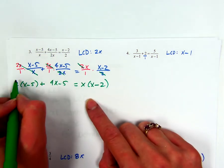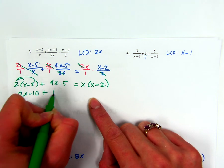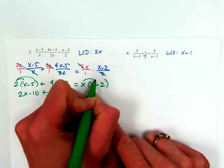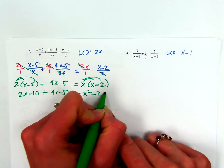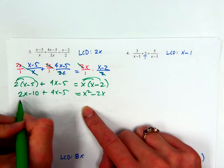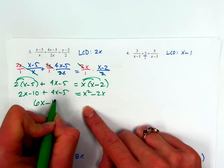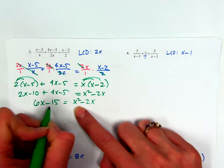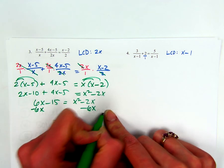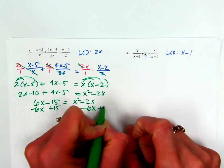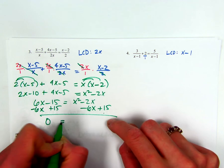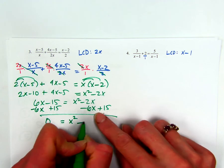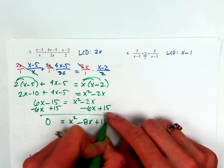All right, so you have to distribute it in a couple of places. 2X minus 10 plus 4X minus 5 equals X squared minus 2X. So now if I add my like terms, I have 6X minus 15 equals X squared minus 2X. Now because I have an X squared, I need all my X's and all my numbers on the other side. So I want this to be 0 equals X squared minus 8X plus 15.